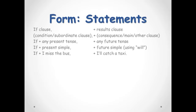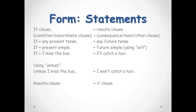So, if, plus present simple, plus future simple using will. For example, if I miss the bus, I'll catch a taxi. We can also use unless instead of if in the if clause. For example, unless I miss the bus, I won't catch a taxi. The if clause can come before and after the results clause. So, if we want to flip the sentence around, the sentence becomes the result clause plus if clause. For example, I'll catch a taxi if I miss the bus. Now, notice that there is no comma when the two clauses are flipped.